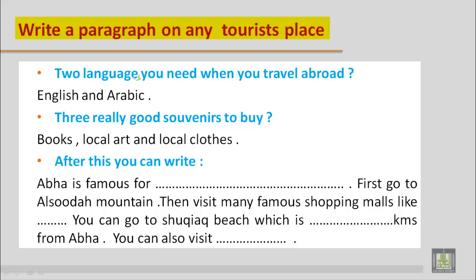Another question: what two languages do you need when you travel abroad? Of course you need English and Arabic, or it depends on the country you are visiting — English, French, etc. Next: what are three really good souvenirs to buy? A souvenir is something like a memento, a token of remembrance from a place you visit. Three really good souvenirs are books, local art, and local clothes.